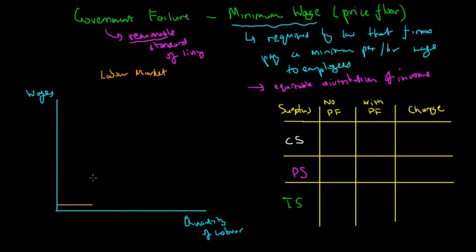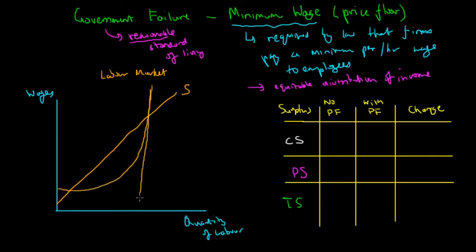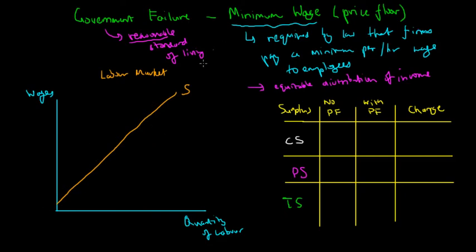For simplicity, we're going to assume the supply of labor is upward sloping and goes on indefinitely — though in reality there is a finite limit to labor since there are only so many people who can work. We also have a downward sloping demand curve, representing demand for labor by firms.